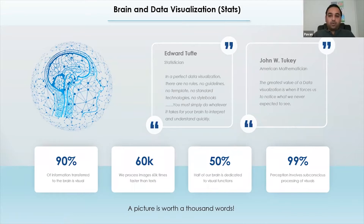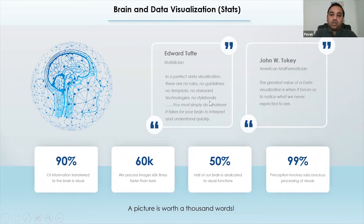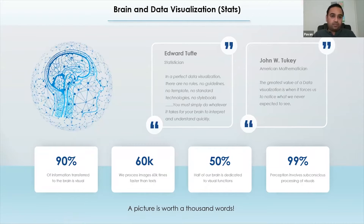John Tukey, another American mathematician, says that the greatest value of data visualization is when it forces us to notice what we never expected to see — something we never thought of. We don't realize the value of the data we have in our organization. If our visualization is showing or forcing you to notice the wealth hidden under the data, that's the best visualization we have. That's the correlation between the brain and visualization.